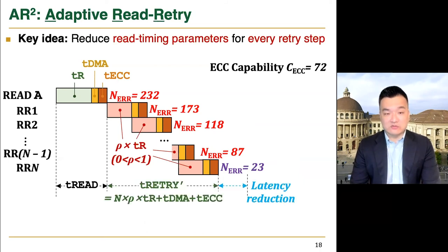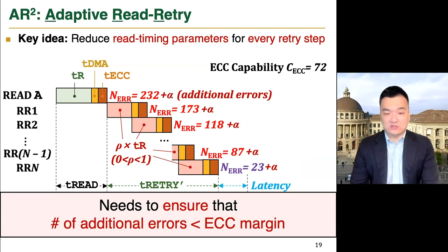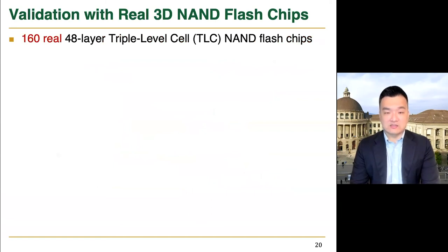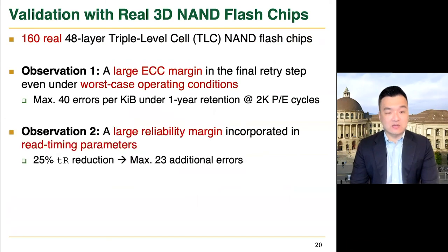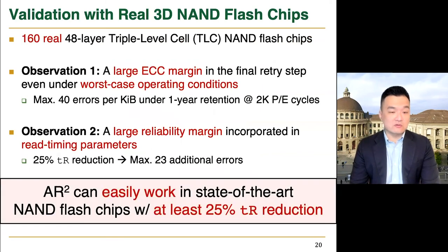However, reducing read timing parameters would inevitably increase the number of raw bit errors, so we need to ensure that the number of additional errors does not exceed the ECC margin in the final retry step, because otherwise the ECC decoding of the final retry step would fail. We validate the feasibility of ARScare using 160 real TSC NAND flash chips. We observe that there exists a large ECC margin in the final retry step even under worst-case operating conditions, and there is also a larger reliability margin than manufacturers incorporated into read timing parameters. We conclude that ARScare can easily work in state-of-the-art NAND flash chips, guaranteeing at least 25% reduction of the page sensing latency for every retry step.